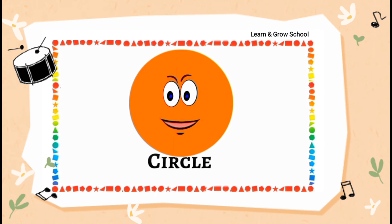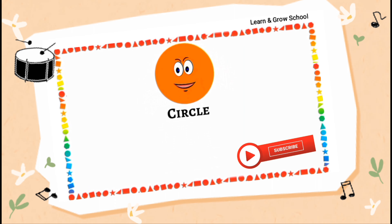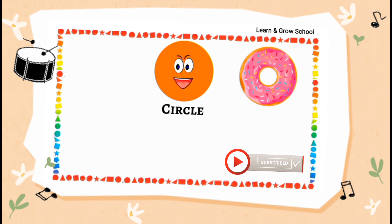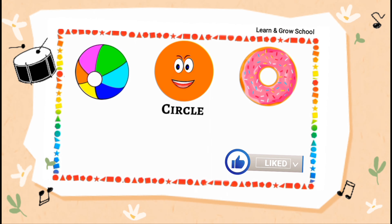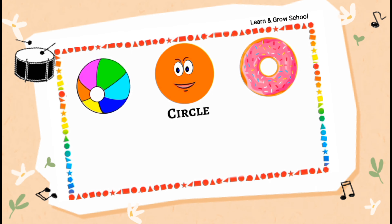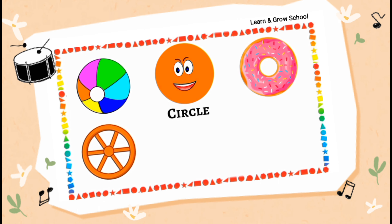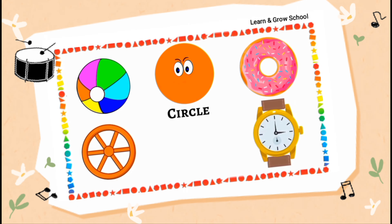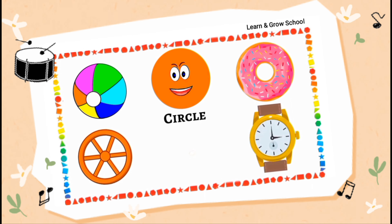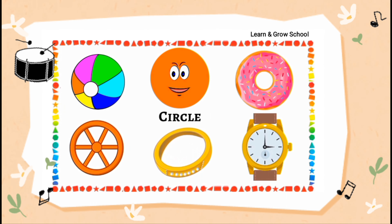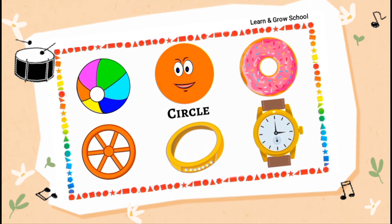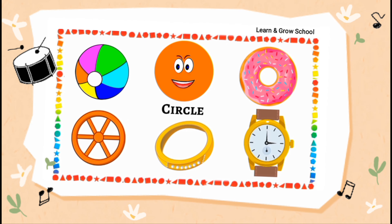You can find me in many objects present in your surroundings. For example, you can eat me as a donut. You can play me as a ball. You can roll me as a wheel. You can tie me as a watch. You can wear me as a bracelet. All these objects can be seen in the shape of a circle.